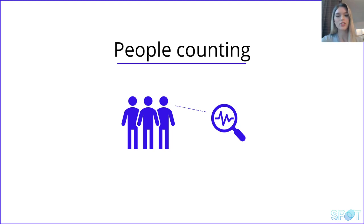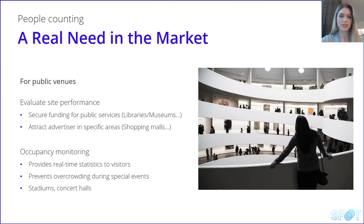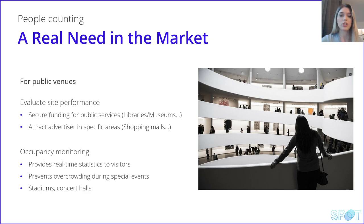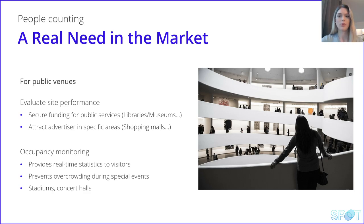Let's see other examples where this feature can be used beyond the COVID context. There are actually many scenarios where counting people can be useful. Public libraries or museums can use it for attendance statistics to secure funding. Shopping venues can evaluate the number of visitors in order to attract advertising — the more visitors are in the shopping center, the more interesting it is to advertise there because of the higher impression rate. Public places can benefit from real-time analysis of visitors and avoid overcrowding. For example, for security reasons there is a defined maximum number of people in stadiums and concert halls, so with the people counting feature it will be easy to control the people flow during events.